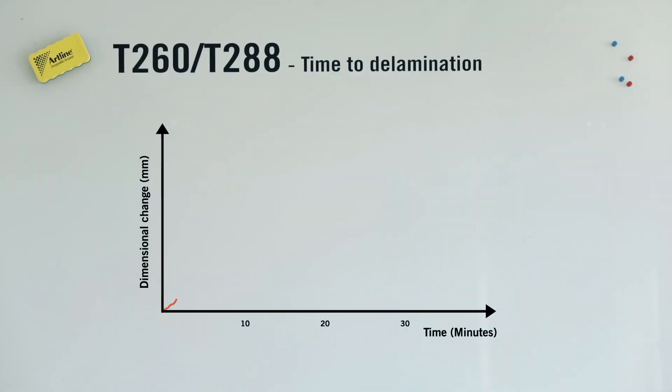Time to delamination, either T260 or T288, this is the method to determine the time when the thickness of the PCB is irreversibly changed at a predefined temperature. For example, 260 or 288 degrees Celsius. This is when the material expands to such a degree that it may delaminate.